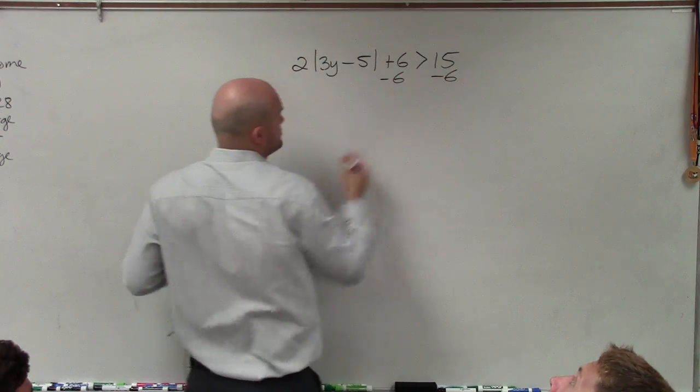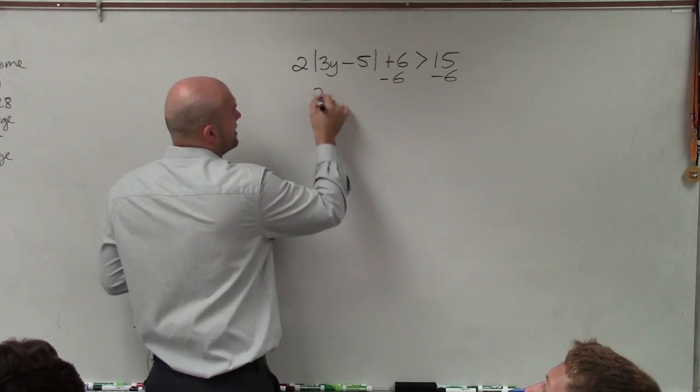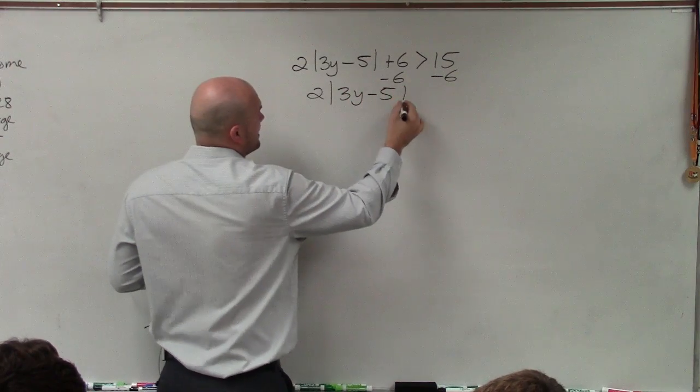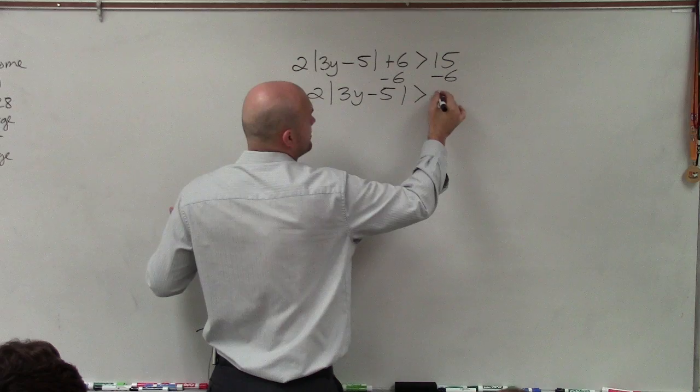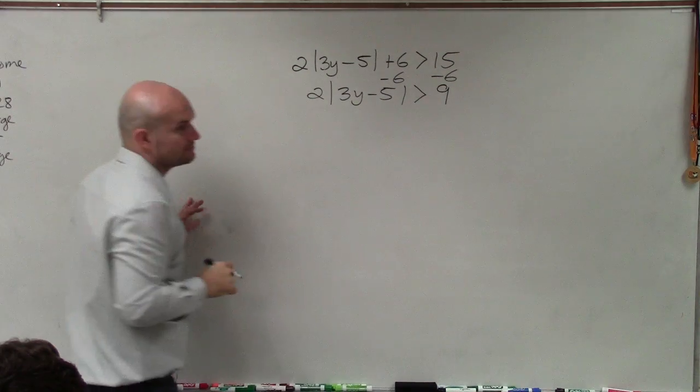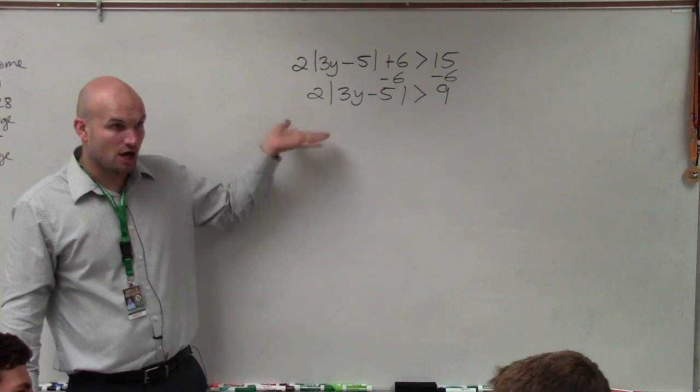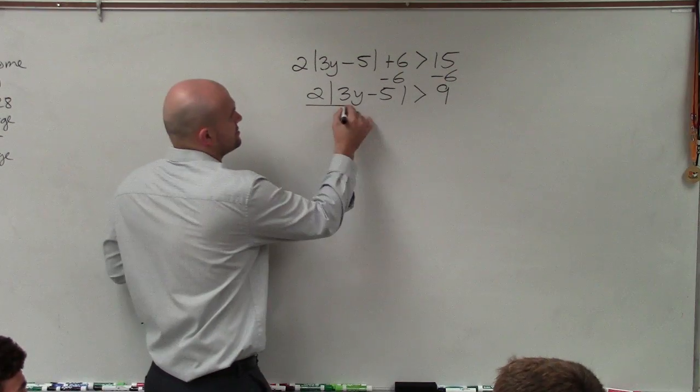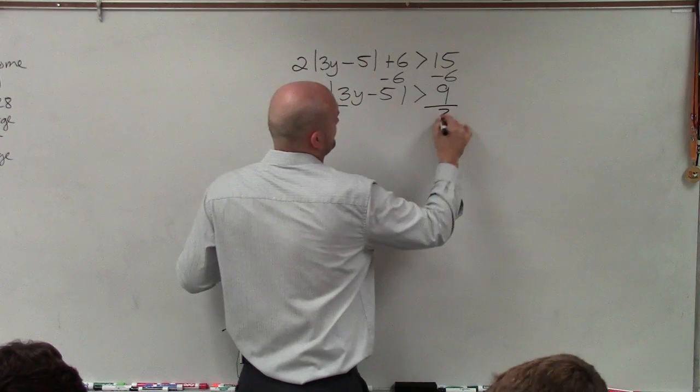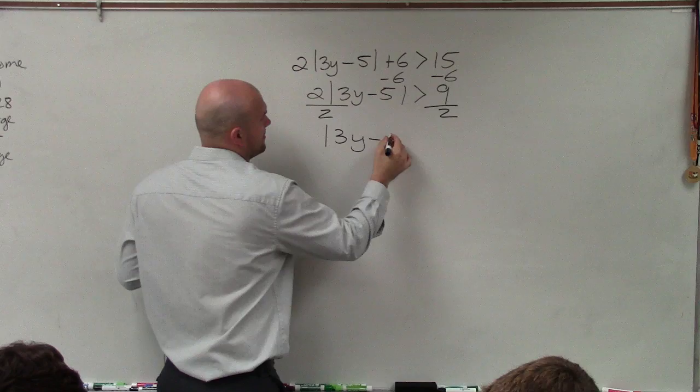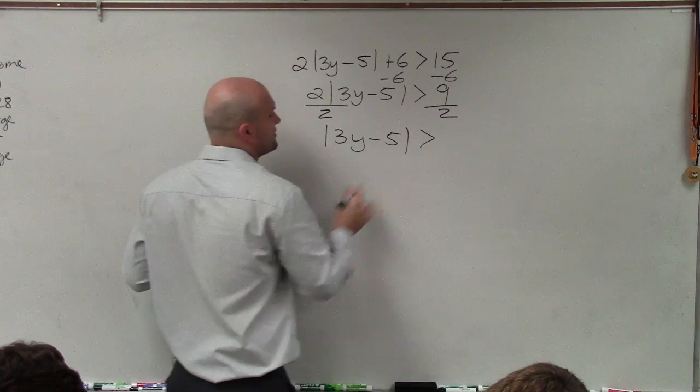So I subtract 6 on both sides. So I have 2 absolute value of 3y minus 5 is greater than 9. Now I need to divide by 2, right? I need to undo the multiply by 2. So I divide by 2.